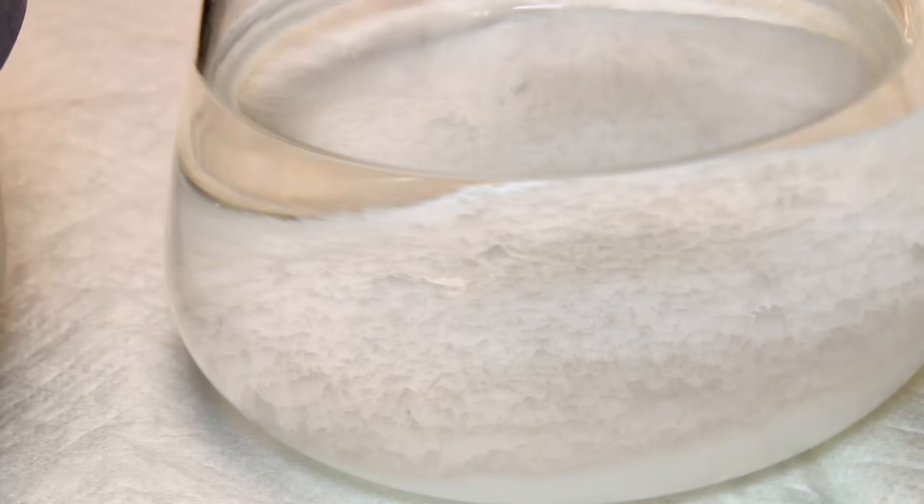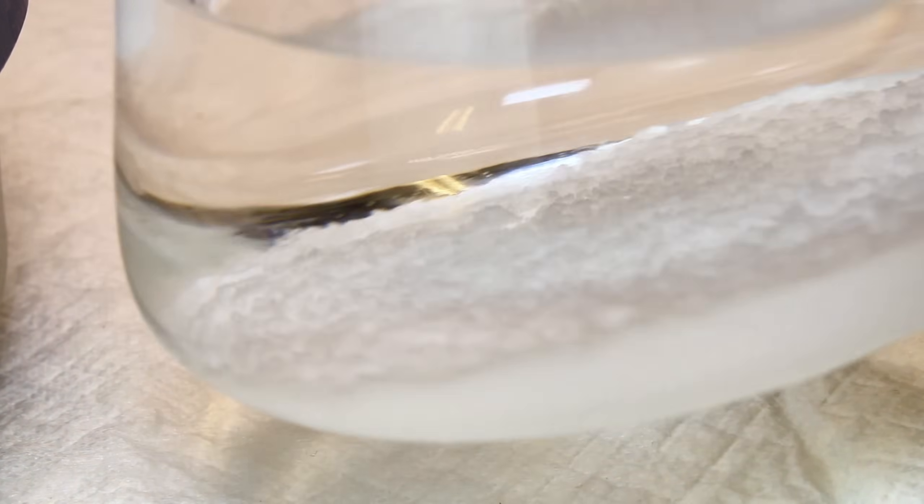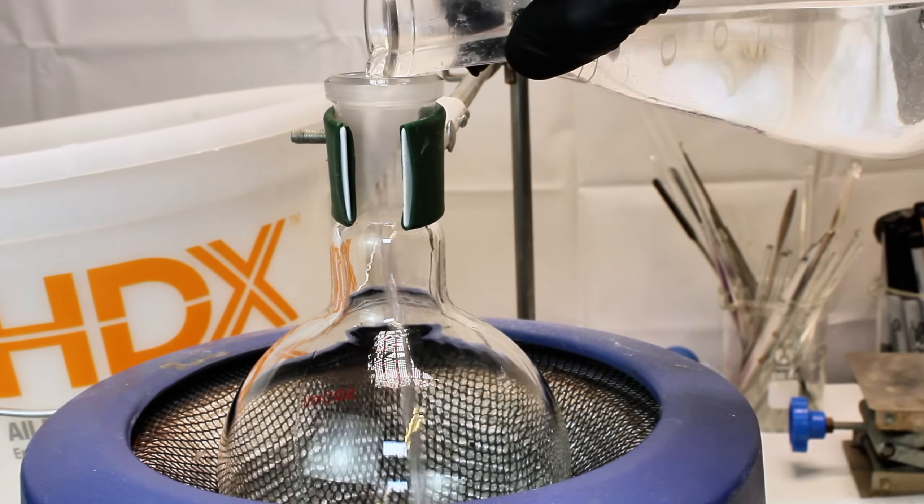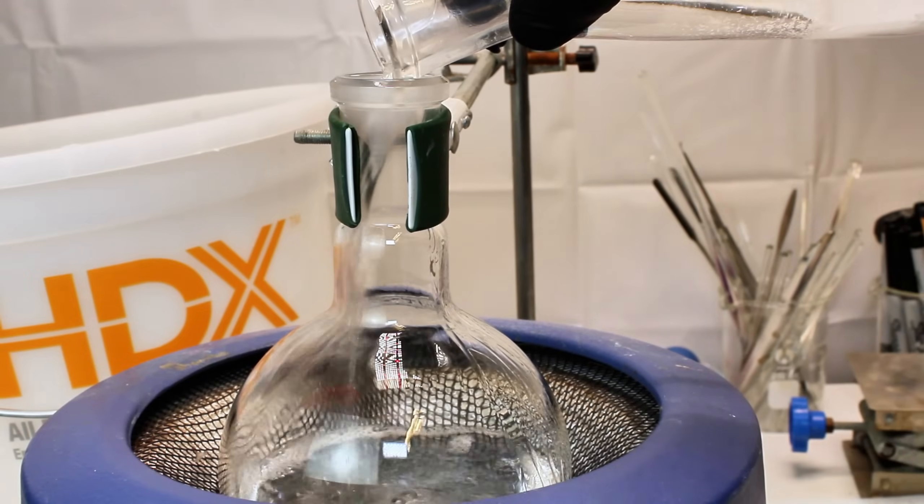I add a few grams of anhydrous magnesium sulfate to remove any water that might have found its way over. After this was allowed to rest overnight, I decanted off my now very dry mixture of ether and alcohol to a new boiling flask and set it up for another distillation.